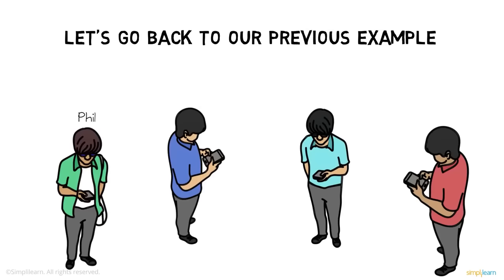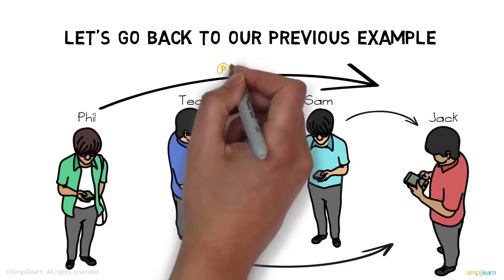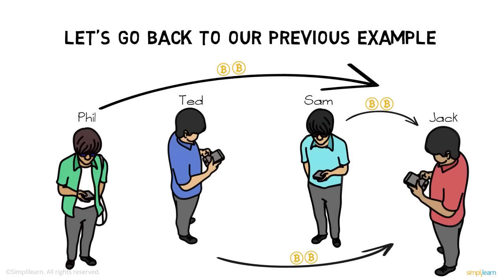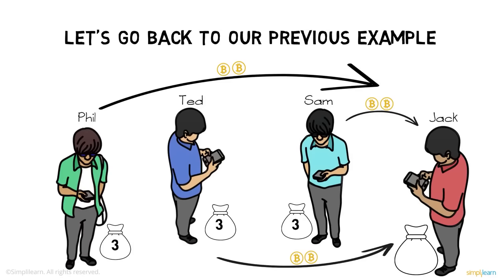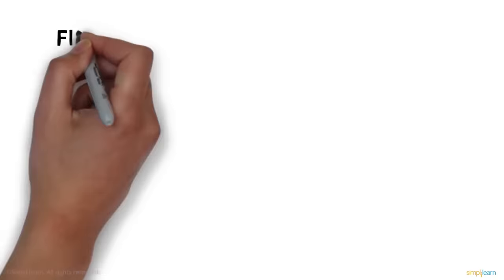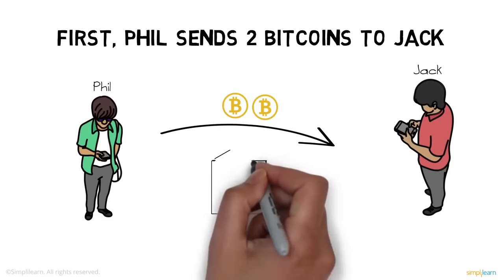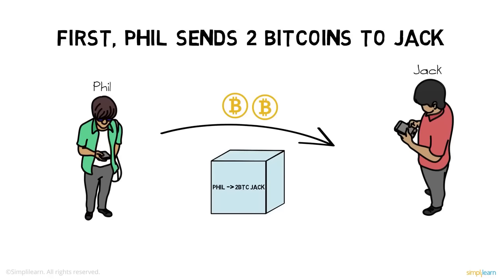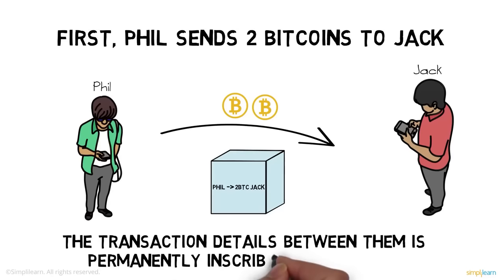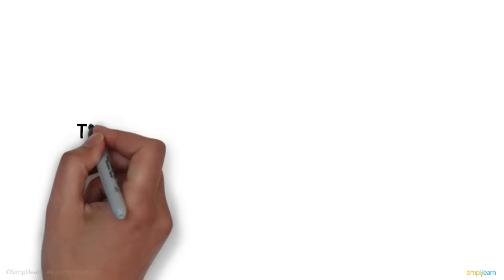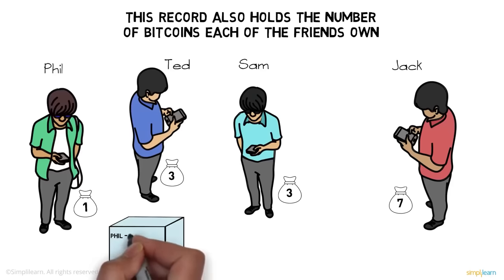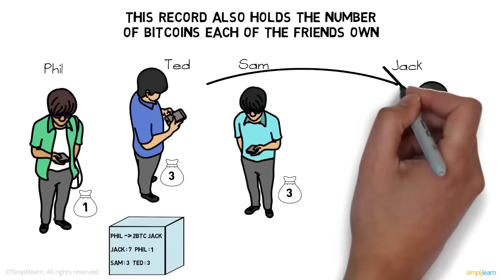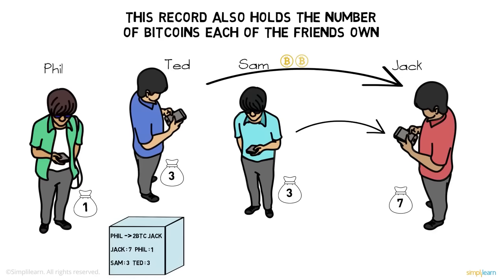Let's go back to our example and have Phil, Ted, and Sam send Jack two bitcoins each as their contribution to the previous night's dinner. Assume Phil, Ted, and Sam have three bitcoins in reserve while Jack has five. First, Phil sends two bitcoins to Jack. A record is created in the form of a block, and the transaction details are permanently inscribed in this block, including how many bitcoins each friend owns. After Phil's transaction, Jack has seven bitcoins while Phil has one.